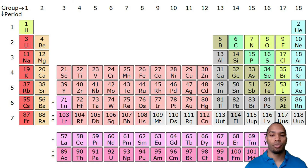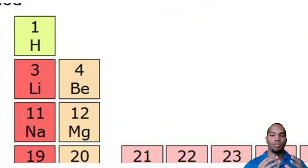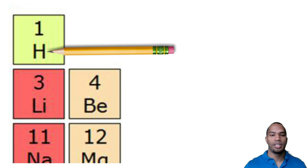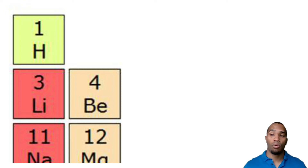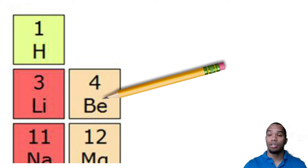Alright students, so the first thing we want to do is figure out what kind of elements we're dealing with. So we need to first go to the periodic table and let's zoom in. What do you notice about the element symbols? What you should notice is that the elements are represented by either a single capital letter, or a capital letter followed by a lowercase letter.